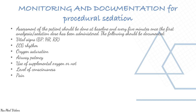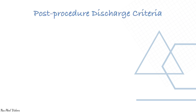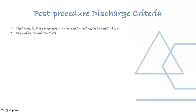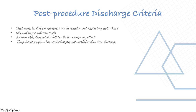Document vital signs, ECG, oxygen, airway use, supplemental oxygen, level of consciousness, pain, and medications. Post-procedure discharge criteria: vital signs, level of consciousness, and respiratory status must return to pre-sedation levels. A responsible, designated adult must be able to accompany the patient, and the patient or caregiver must have received appropriate verbal and written discharge instructions.